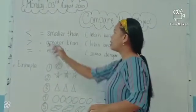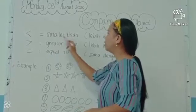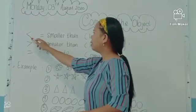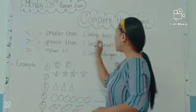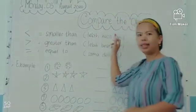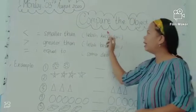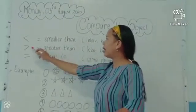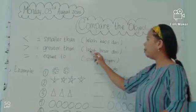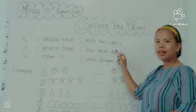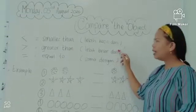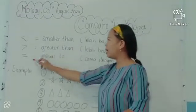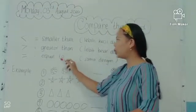The three symbols are: smaller than, greater than, and the last is equal to.